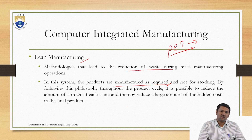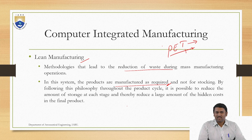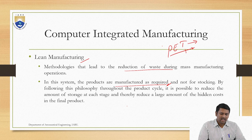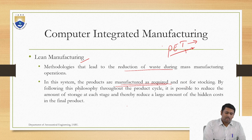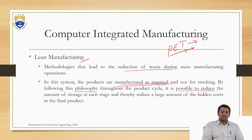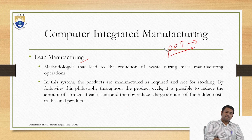We are supposed to stock them, hold them, and protect them until they are sold — which is a waste of resources as well as manpower. In order to reduce that, we manufacture as required. Following this philosophy throughout the product cycle, it is possible to reduce the amount of storage at each stage and thereby reduce the large hidden costs of the final product.